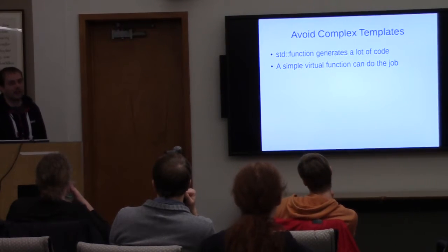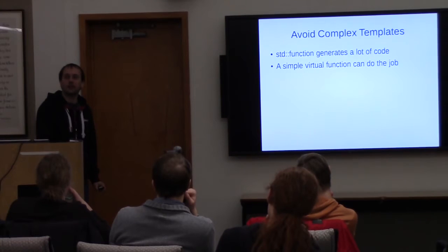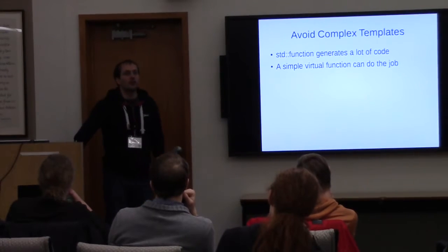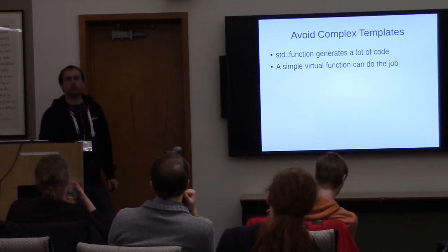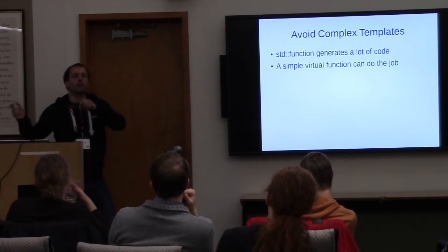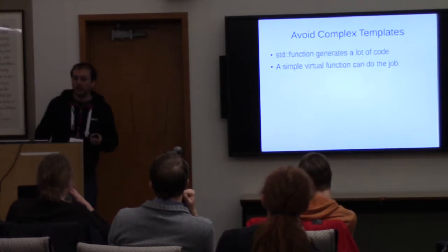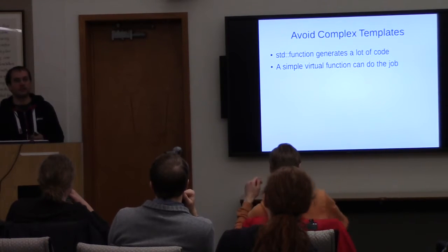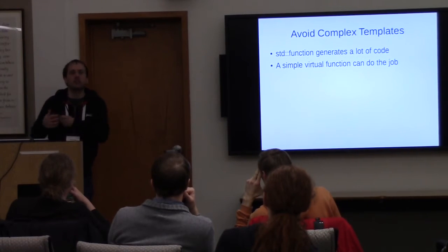std::function generates a lot of code. Someone at the practical performance talk the day before noted this for performance reasons; for me it's about object code size. std::function generates a lot of code, and a simpler replacement — when you don't need user-facing flexibility — is to make a small interface that has one virtual function with the same signature. It does the same thing with much less work for the compiler.